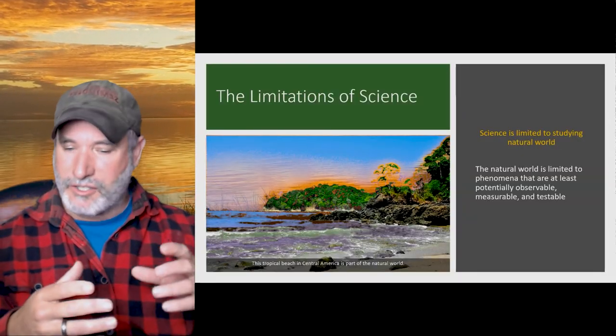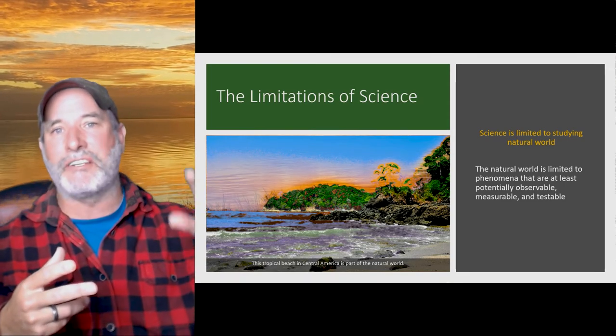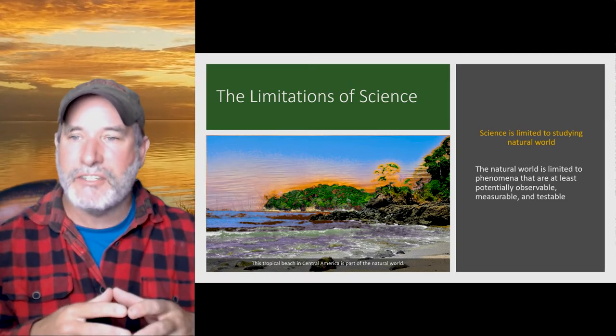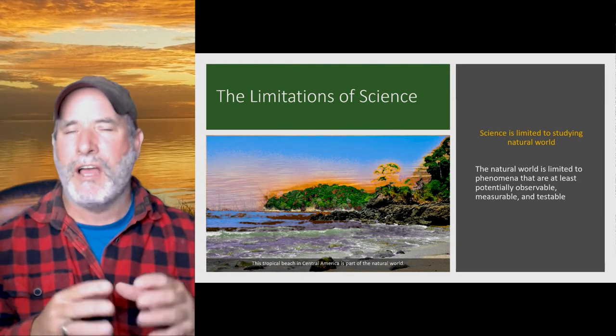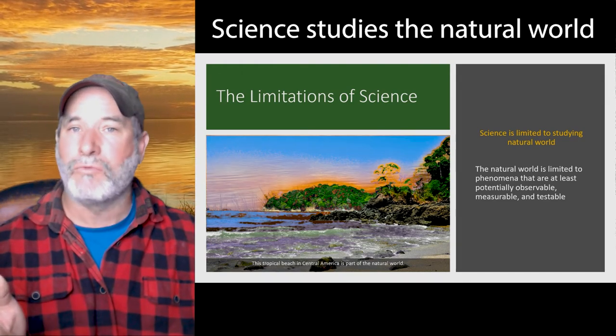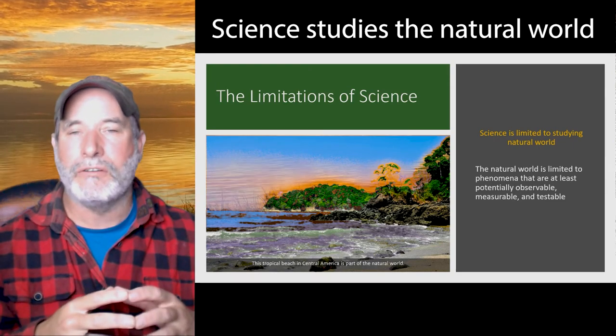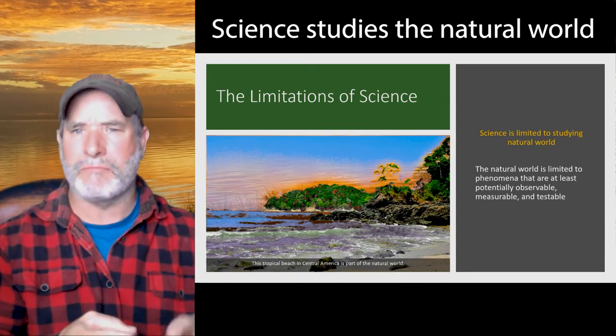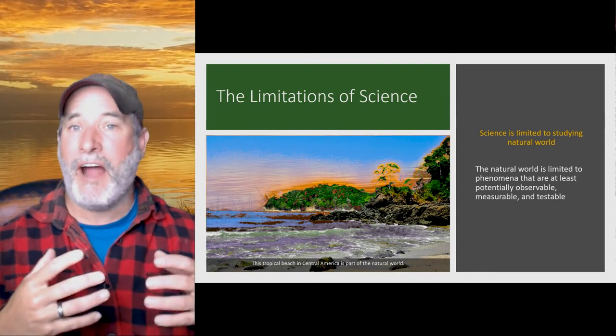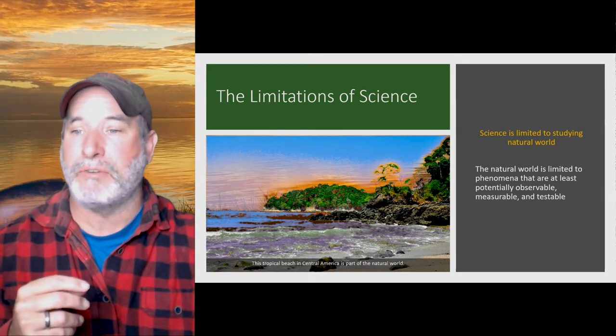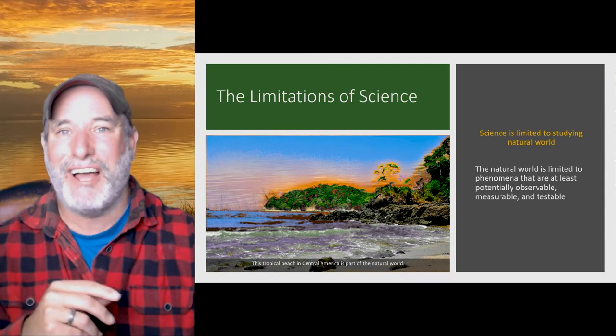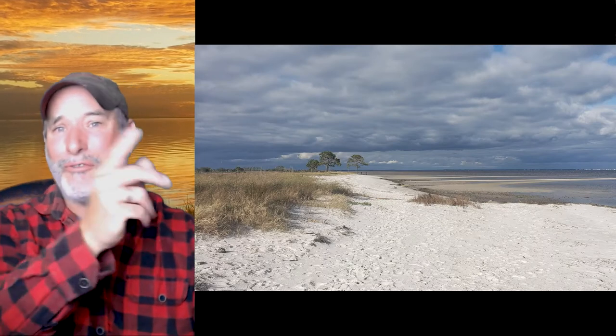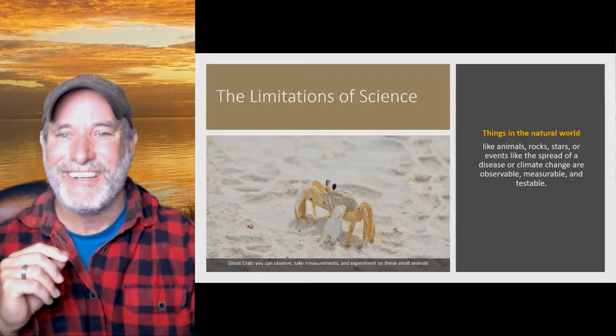Now, here's the thing about science. Science is based on making observations and asking questions and then testing our assumptions. But there is a limitation to science. Science is really about studying the natural world. So what is the natural world? I already said this. The natural world is limited to things that are at least potentially observable, measurable, and testable. And that's important. We may not see things directly, but it should be at least potentially. And of course, if you're looking at that beautiful beach that's from Costa Rica, I know many of us wishing we were at the beach right now. Wait, I am going to the beach most days. I'm in Florida right now.